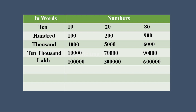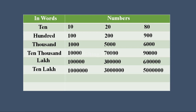Lakh means there should be 5 zeros. Next, ten lakh — in ten lakh there are totally 6 zeros. Write 10 first, then lakh means 5 zeros, so write 5 zeros; combining you can see 6 digits of zero, so it comes under ten lakh. Similarly, 30 lakh means write 30 then 5 zeros — combining gives 6 zeros. 50 lakh also combines to give 6 zeros, so it comes under ten lakh.